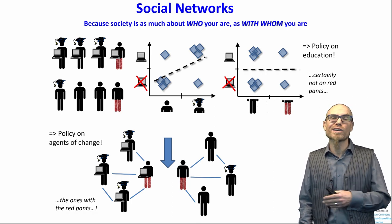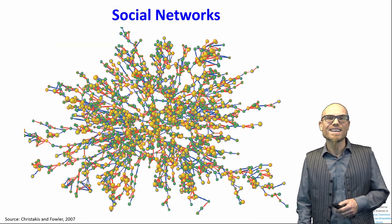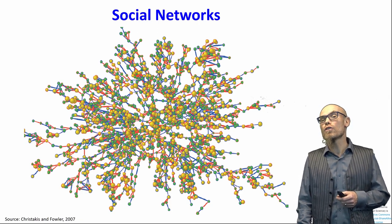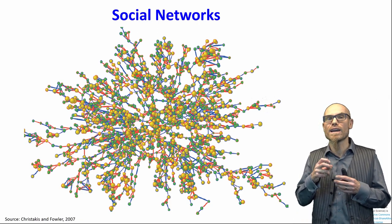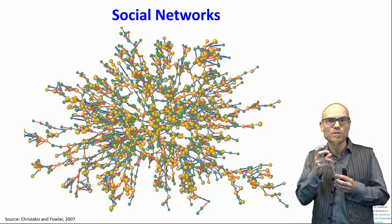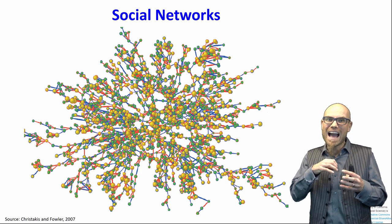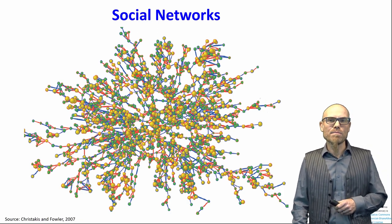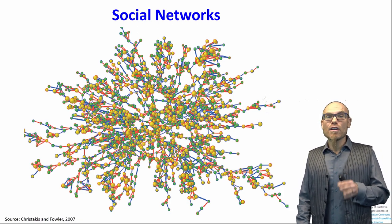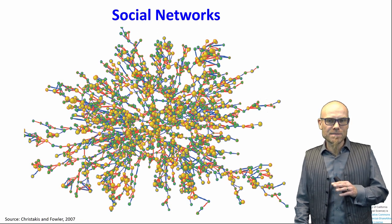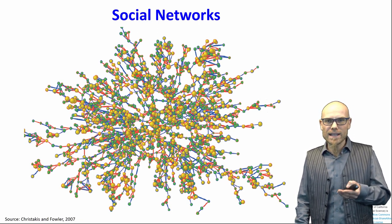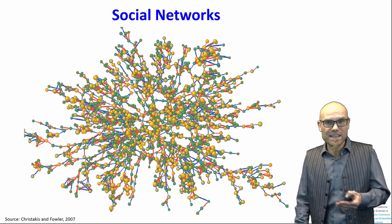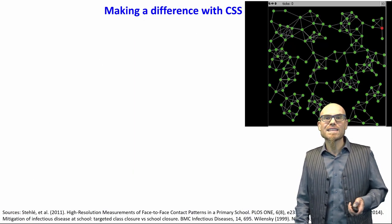Social networks have very intricate structures — just look at this network here. We will analyze these structures across two lectures: in one lecture we look at the structure of the network, in the other we look at how networks evolve and change over time. Both are very relevant for doing social science, and you can get a lot of policy mileage out of it to make the world a better place.